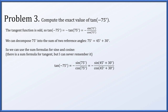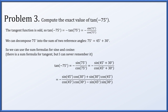Both of those 75 degrees we'll decompose as 45 plus 30 so that we can use the sum formulas. In the numerator we have negative sine of 45 degrees cosine of 30 degrees plus sine of 30 degrees cosine of 45 degrees, using the sum formula for sine.